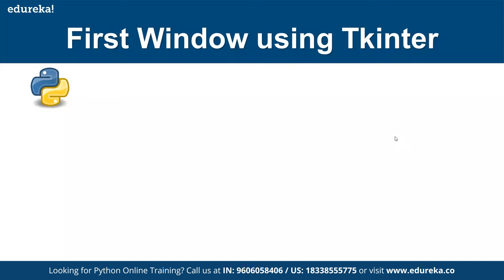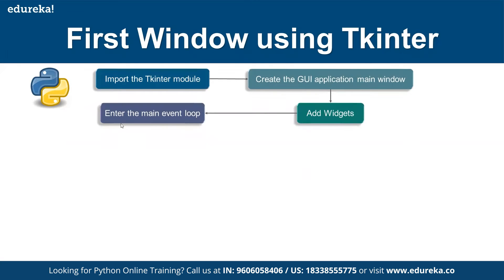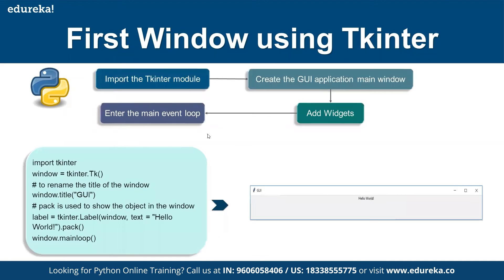To create a window in Tkinter, first import the Tkinter package, then create widgets and enter the main event loop. In the code, we import the package, call the Tk() method, call the label method to display 'Hello World', and set a title using the title() function. This creates a simple pop-up window with the corresponding output.